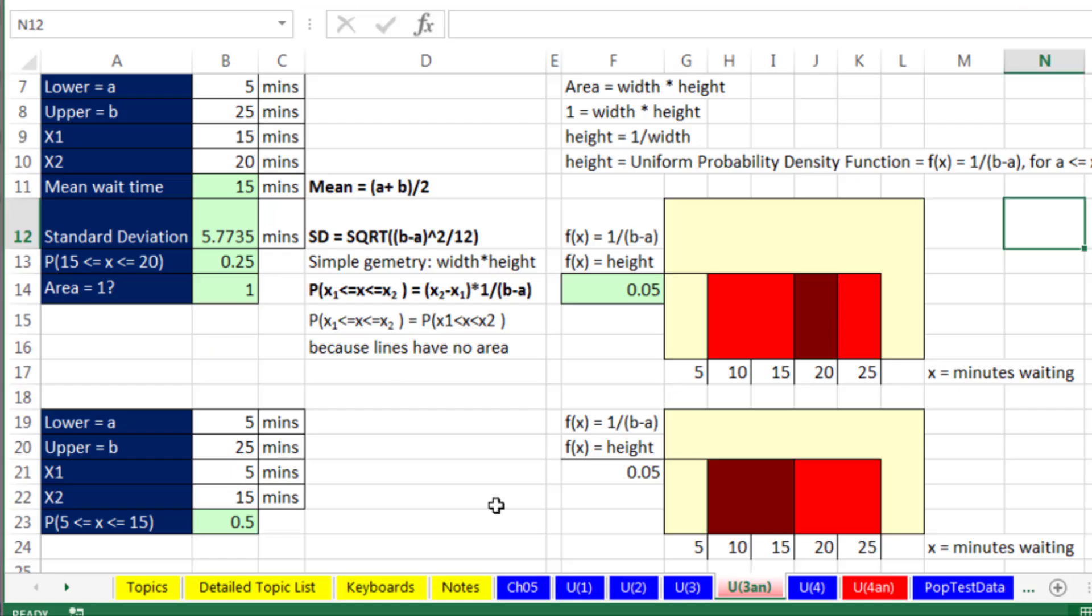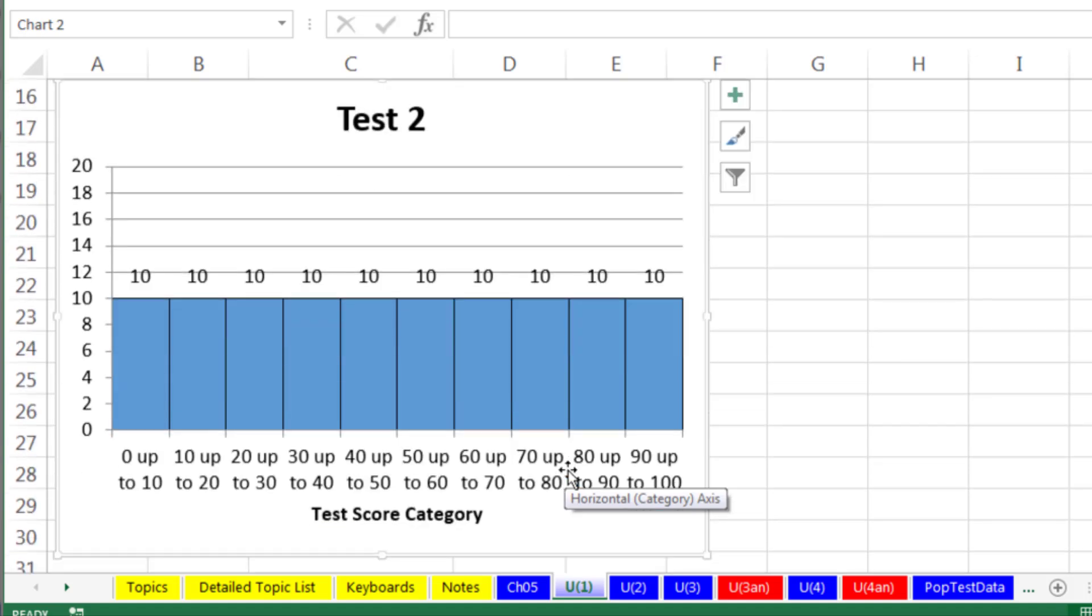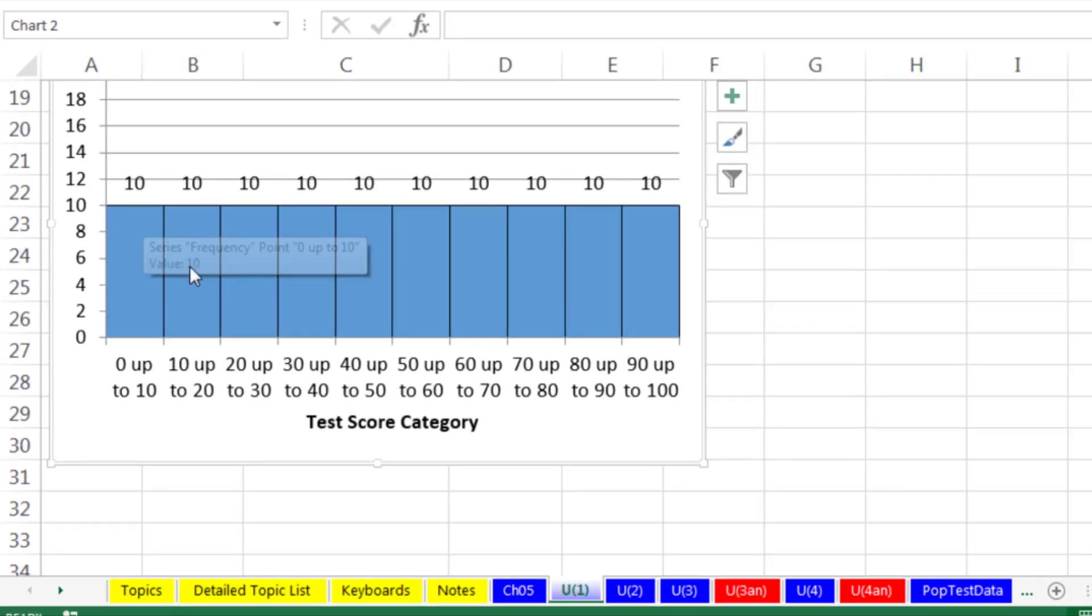Now, let's go look over in Excel on sheet uniform 1. Here's a different picture. Here's all of our testing categories. 22 people got 70 to 80, 15 people got 80 to 90. But now, imagine this. Exactly 10 people scored in each category. 10 categories, frequency 10 in each. That means if you calculated the probability for all of these categories, they would all be 0.10. That's a uniform distribution.